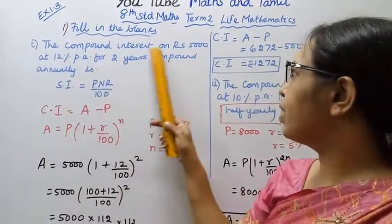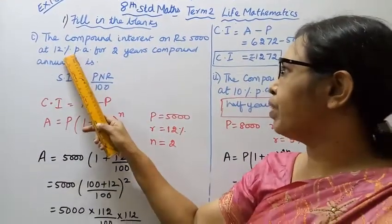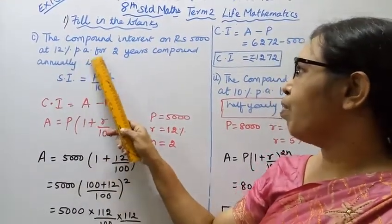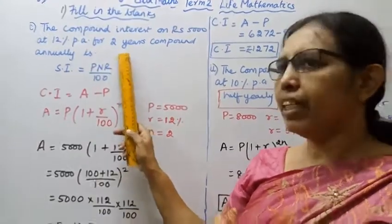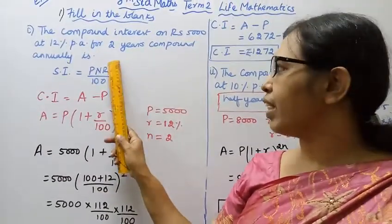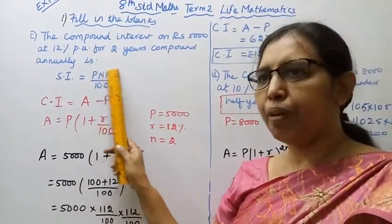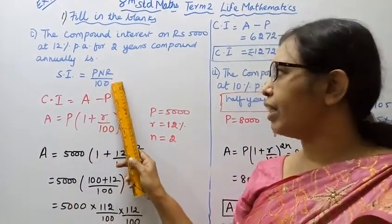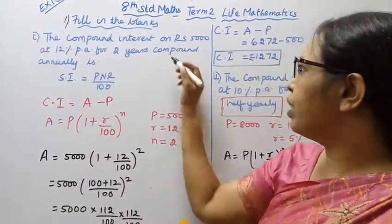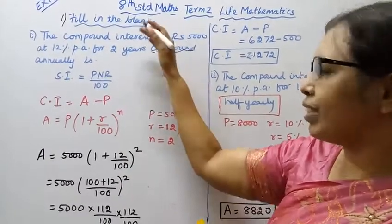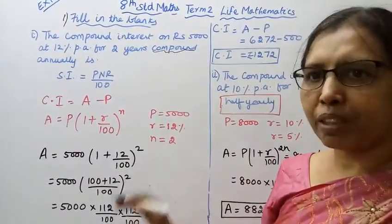The compound interest on rupees 5,000 at 12% per annum for 2 years compounded annually. You can get the simple interest formula: PNR by 100.